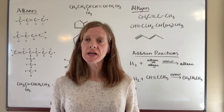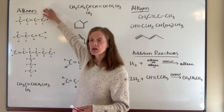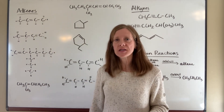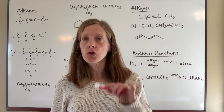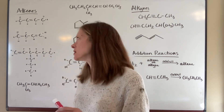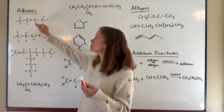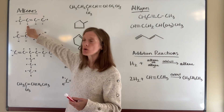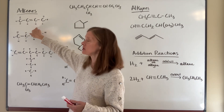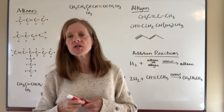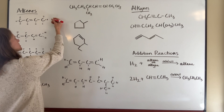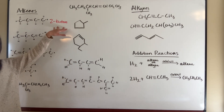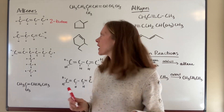We'll start with learning how to name alkenes, which have double bonds. When you name these, you need to make sure that you give the double bond the lowest possible number when you number the chain. For this first example, it doesn't matter which end you number from — either way the double bond is on carbon two, so this is 2-butene. You have to specify where the double bond is in the carbon chain.